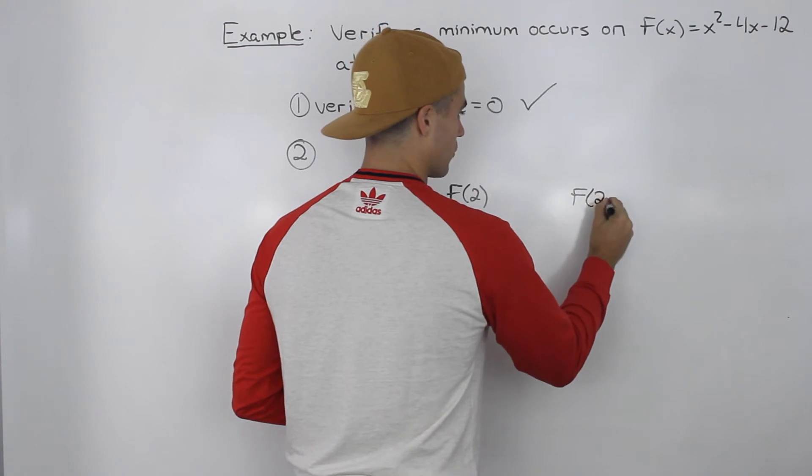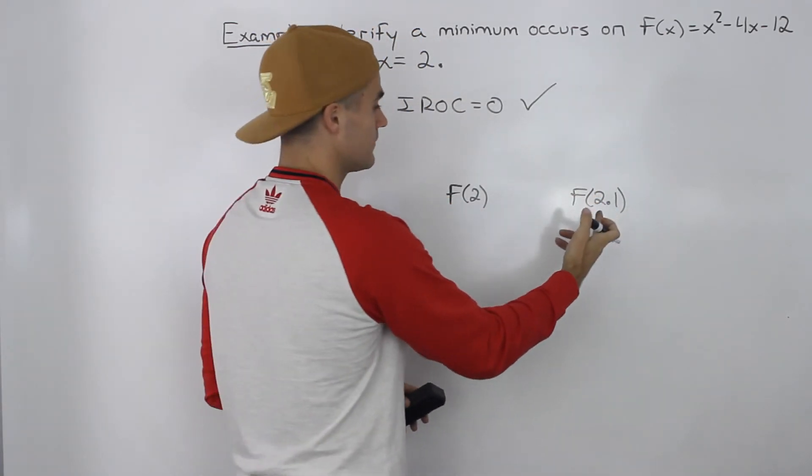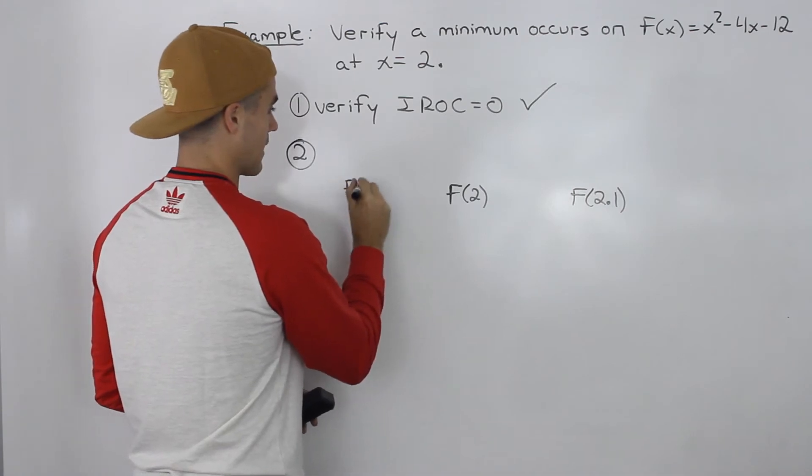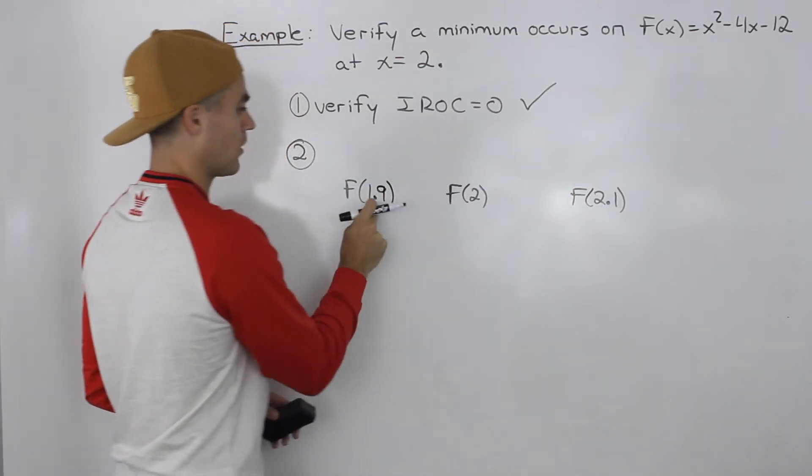So we have to find f(2.1), let's say, or even f(2.01) and f(1.9) or f(1.99).